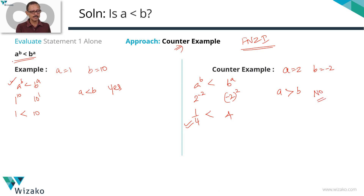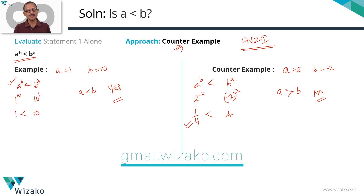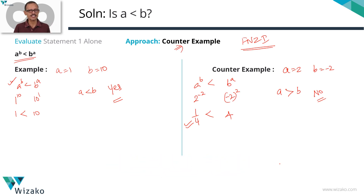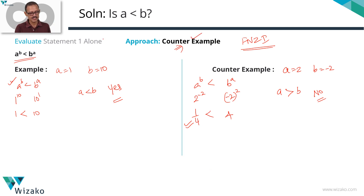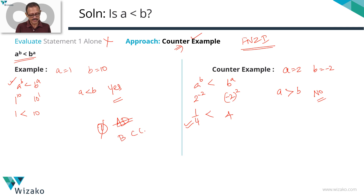We found one example where the answer is yes, and a counter example where the answer is no — both satisfying a^b < b^a. Since we can get both yes and no with statement 1 holding good, knowing that a^b < b^a is not sufficient to determine whether a is less than b. A counter example exists — statement 1 alone is not sufficient. Eliminate answer options A and D; we're down to B, C, or E.